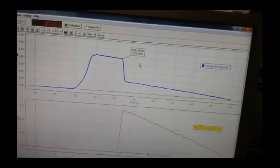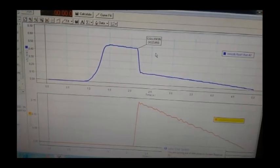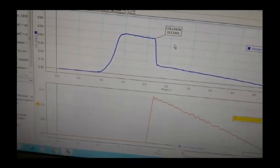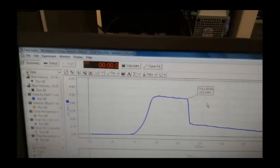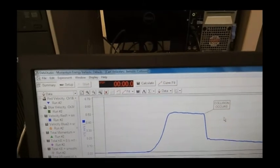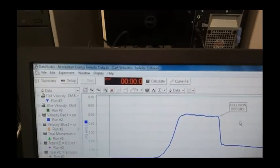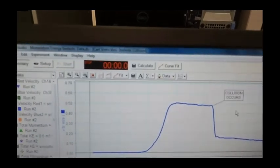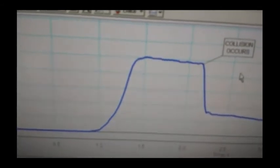Using the velocity versus time graph on the computer, find the velocity of cart one just before and after the collision. If you click and drag on the data, that data point will be highlighted in the table. This is easier than trying to read the velocity off the graph. It might be helpful to expand the graph to see just the area you are interested in.